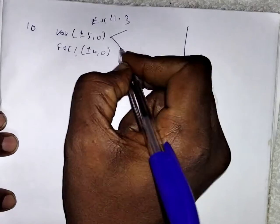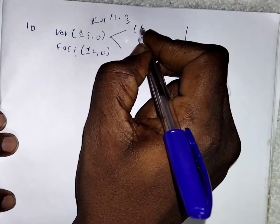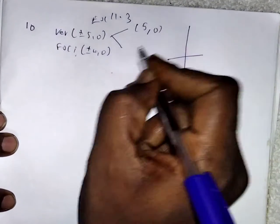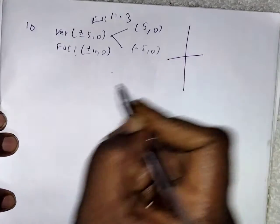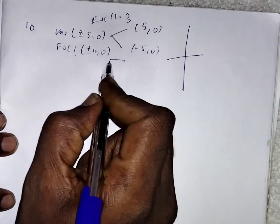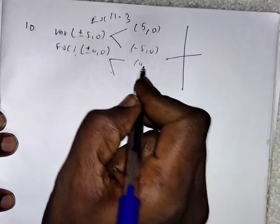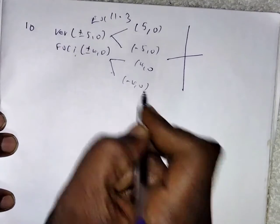For vertex, we have two vertices A and B at plus or minus 5 comma 0. You can write 5 comma 0 and minus 5 comma 0. Two vertices. Like that, two foci at 4 comma 0 and minus 4 comma 0.